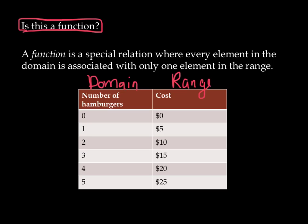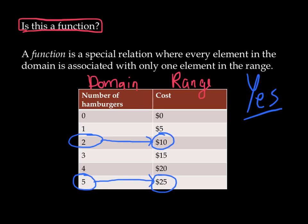And the answer is, yes. This is a function. Every time you choose a number of hamburgers, like two for example, you know with absolute certainty what the cost is that's associated with that number of hamburgers. If I said, hey, I went and bought five hamburgers today, well, you would be able to look at this table and know absolutely with total confidence what was the price that I paid. So, every element in the domain is only associated with one element in the range.